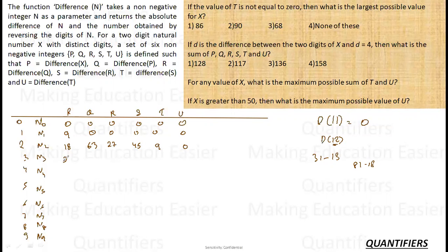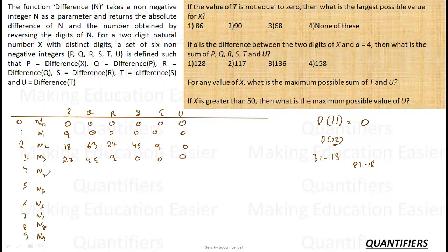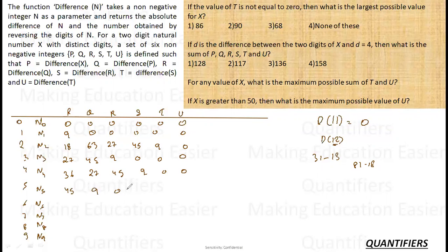For digit difference 3, p = 27, then 45, then 9, then 0, 0, 0. For digit difference 4, p = 36, then 63, then 27, then 45, then 9. For digit difference 5, p = 45, then 9, then 0, 0, 0, 0.